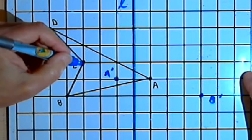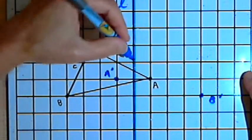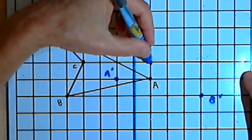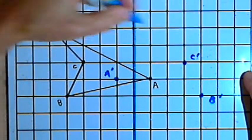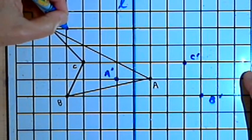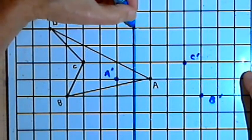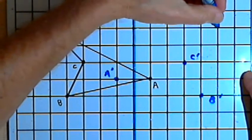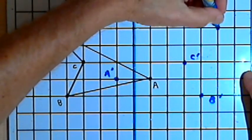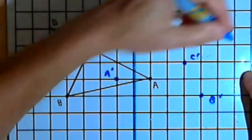We'll go on to point C. Point C is one, two, three units from line L. I'll go three units further. That's going to be C prime. And point D is one, two, three, four, five units from line L. So continuing in the same direction, I'll go five units further. And that gets me to D prime.